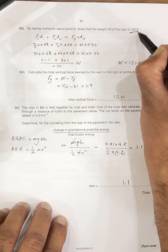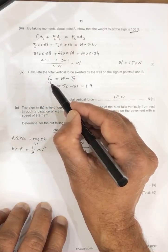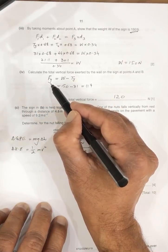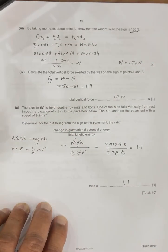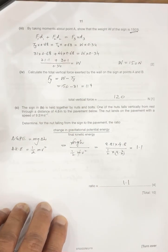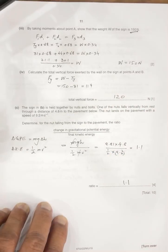Calculate the total vertical forces exerted, Fy W minus Ty, W, because both are acting in the opposite direction, Ty acting up, weight acting down, so the difference of both is 119, so it is 120.